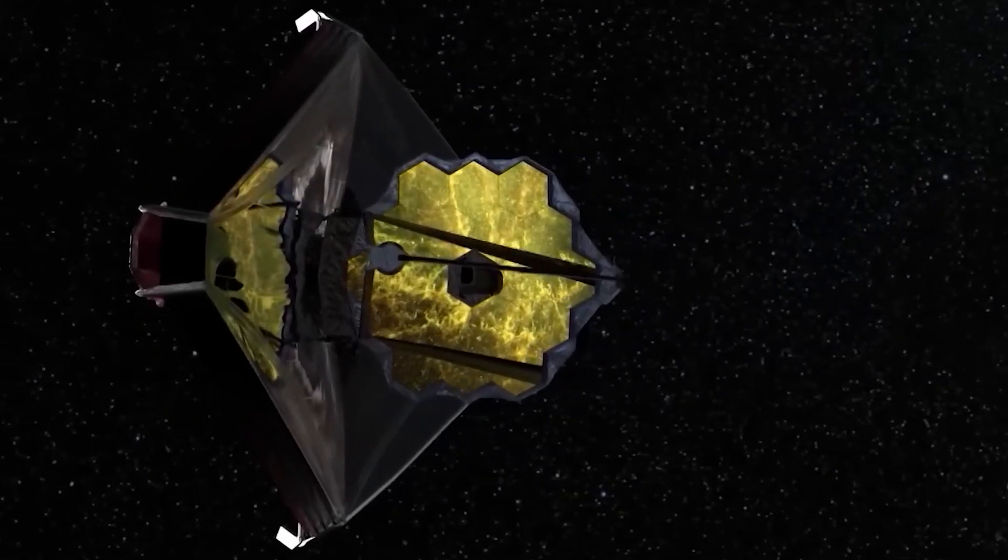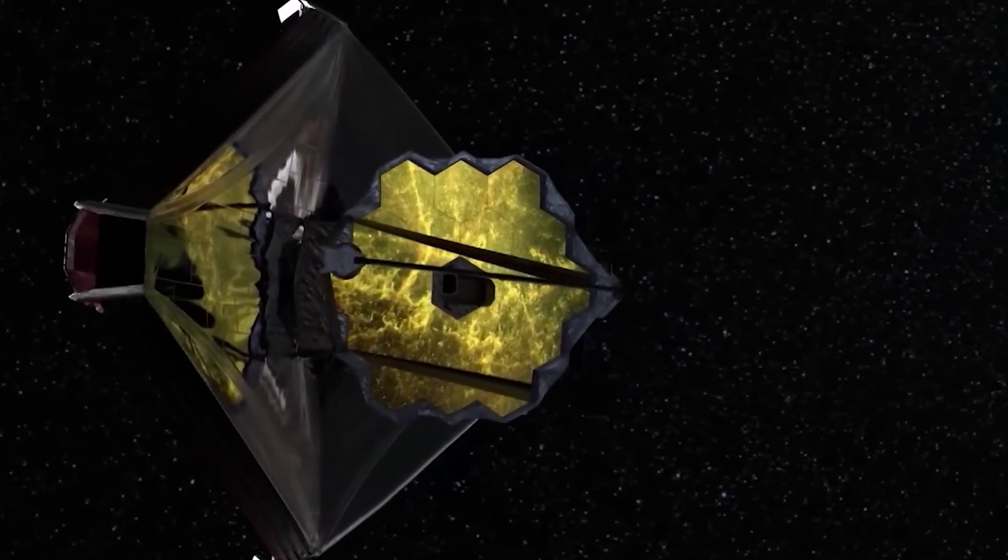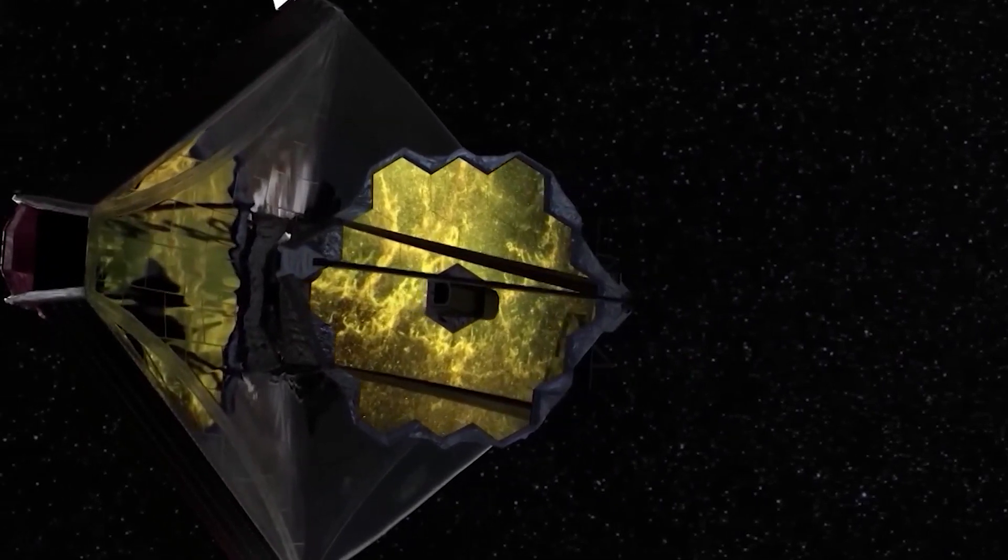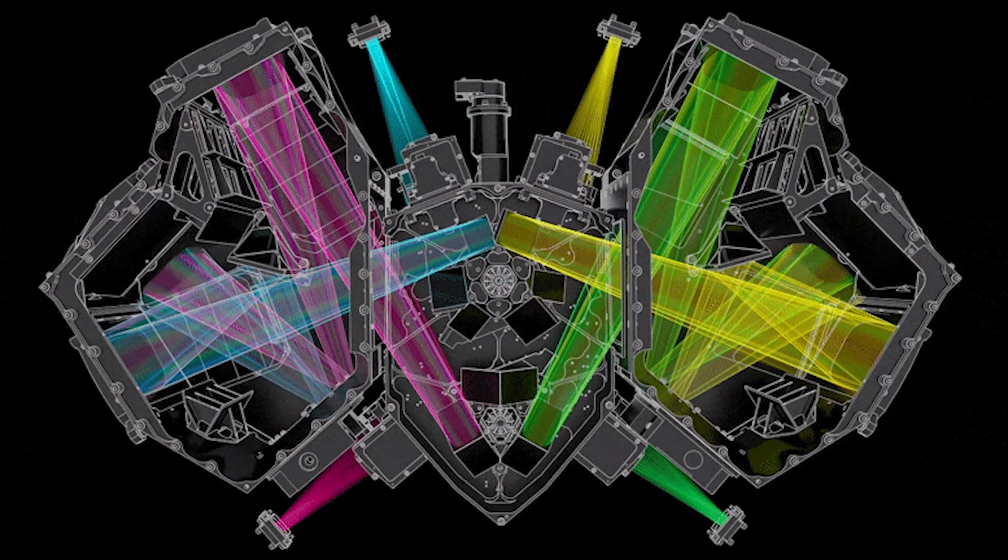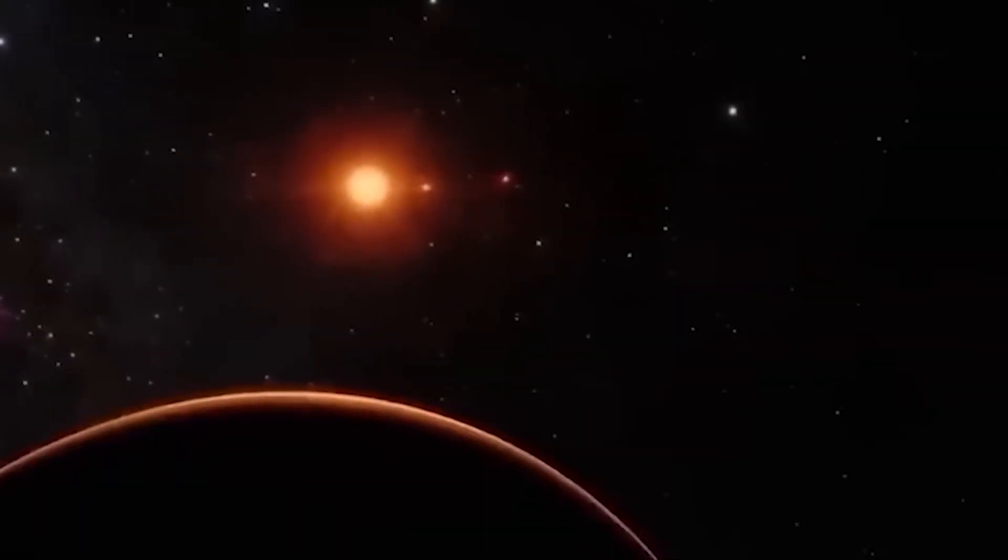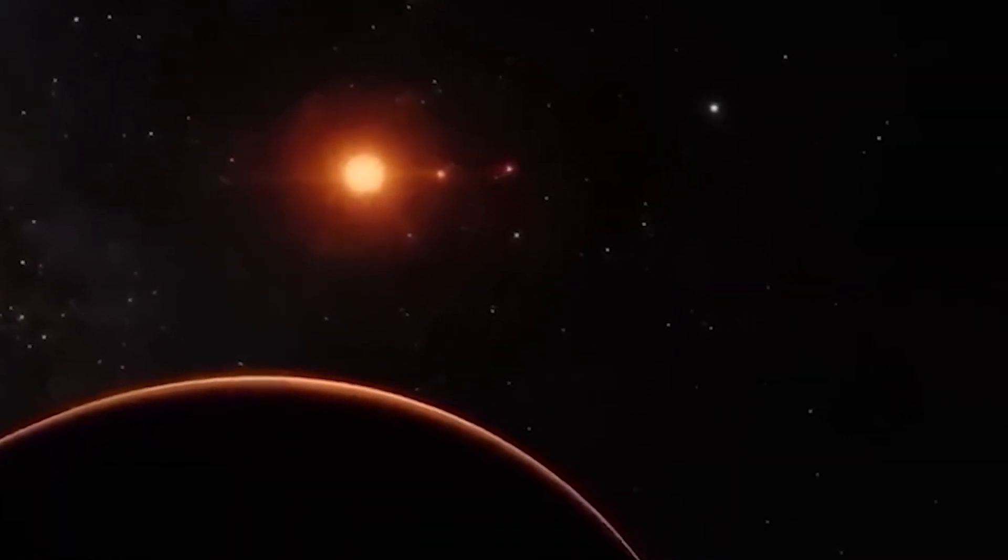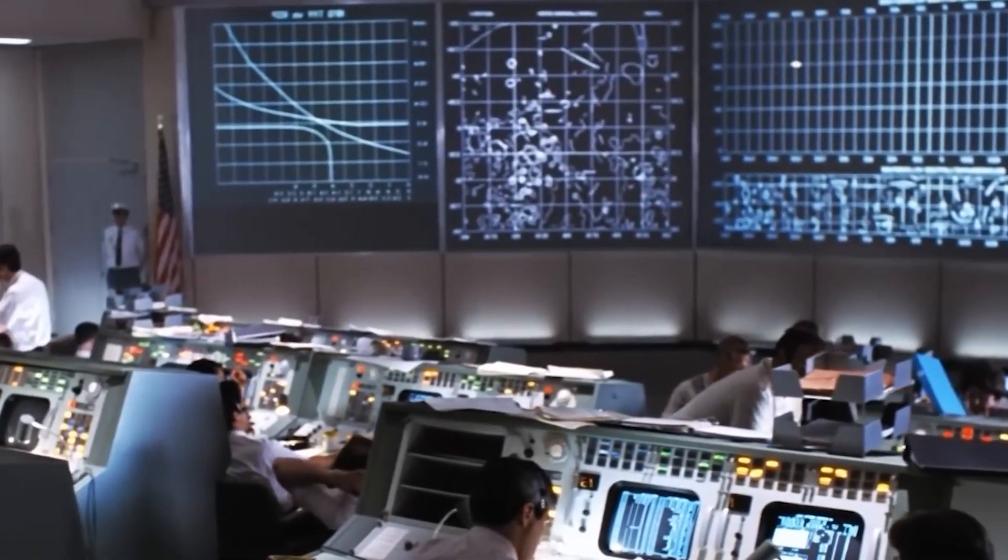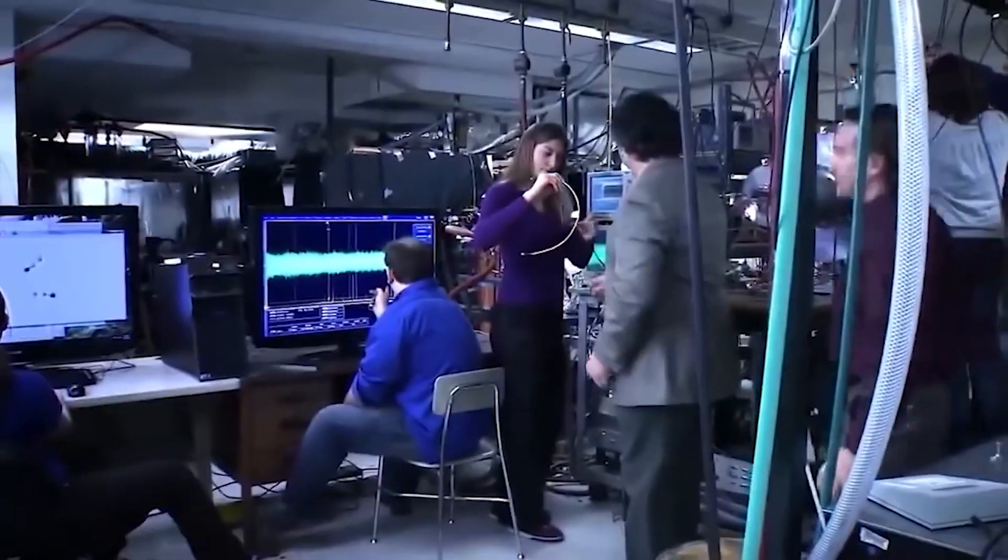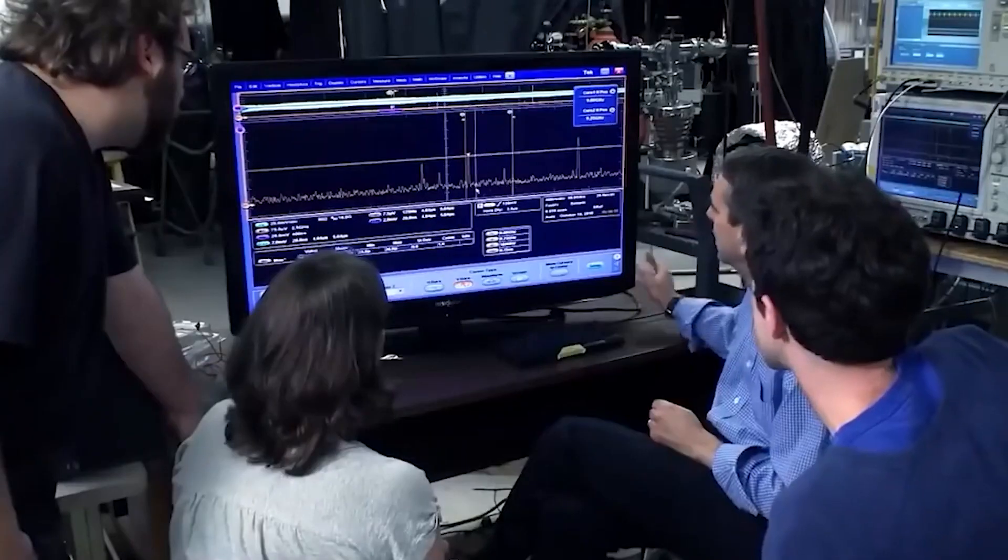The JWST's suite of instruments is well suited for studying the atmospheres of exoplanets like Proxima b. One of its key instruments is the Near Infrared Spectrograph, which can measure the spectra of exoplanet atmospheres with high sensitivity and resolution. By analyzing the spectra of starlight that passes through or reflects off a planet's atmosphere, astronomers can detect the presence of gases and molecules such as water, methane, and carbon dioxide that are indicative of biological or geological activity.